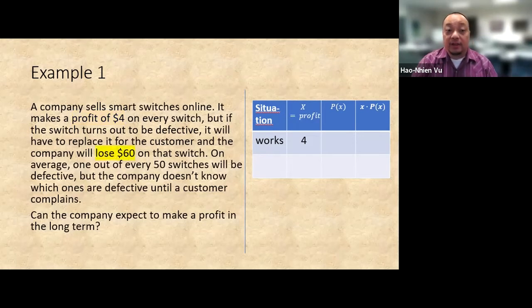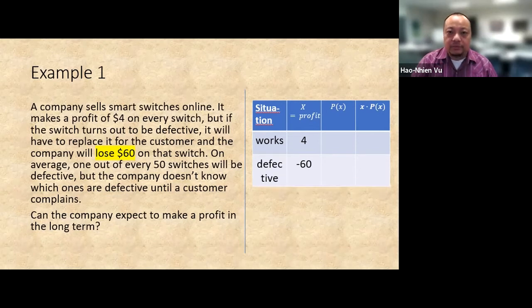What other possible profit value? Here's another. It doesn't say the word profit, it actually says lose sixty dollars. But that's the same as a negative sixty dollars in profit. So you got to read carefully and critically on every word of the word problem. So put in negative sixty in the profit column for that situation and put in the description of when it is that we'd lose sixty dollars. That would be when the switch is defective, right? Defective in the first column.